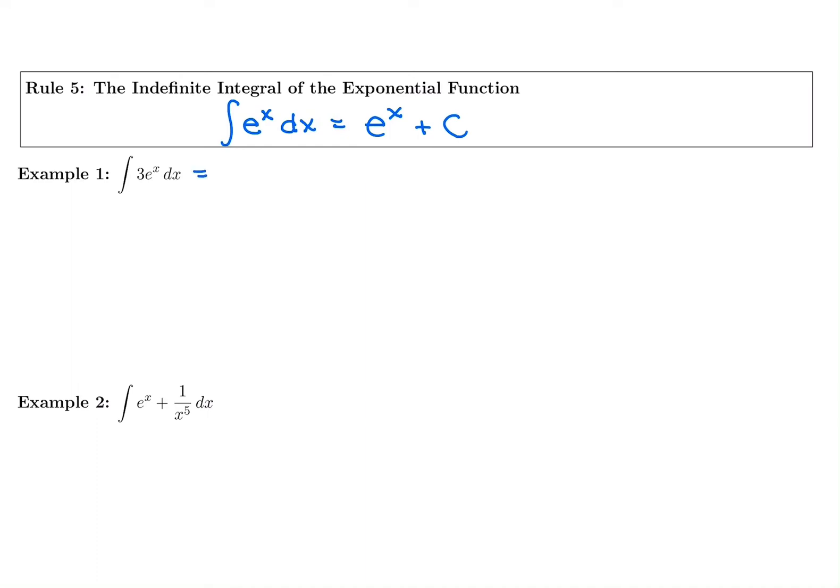So if we look at this first one, we just have a constant multiple out front that we're going to keep, whether we're taking a derivative or an antiderivative. So we're going to keep the 3, and then the antiderivative of e to the x is e to the x plus C.